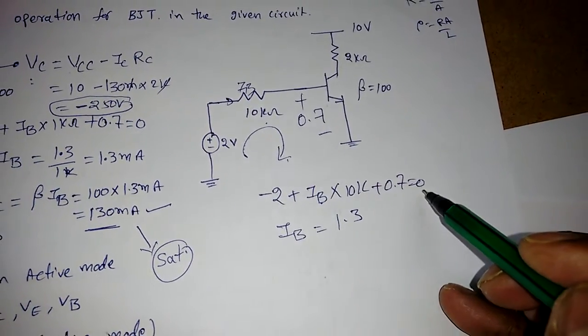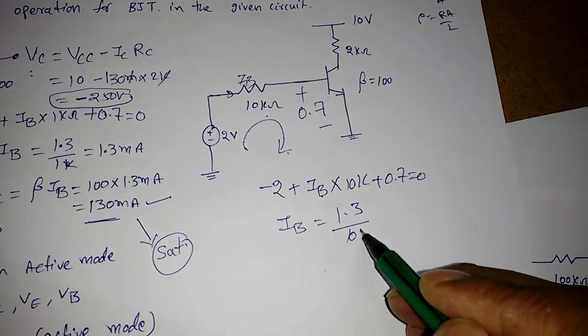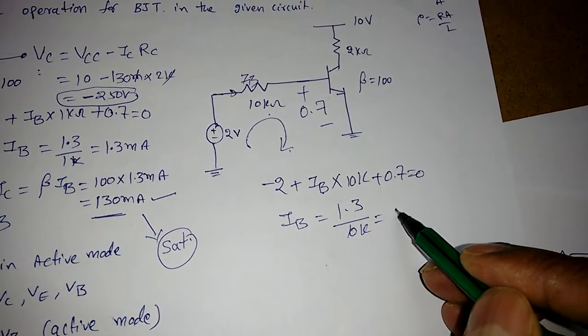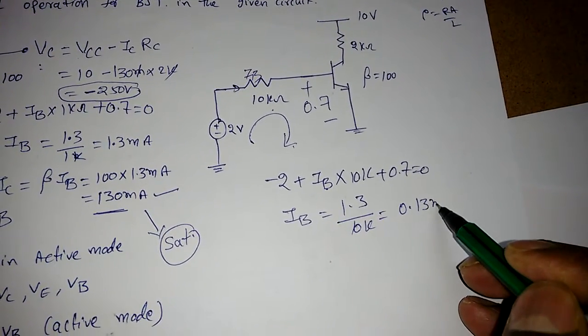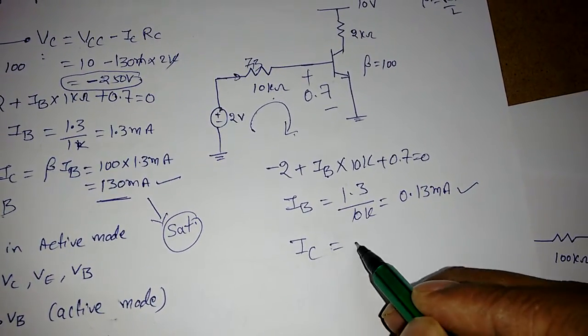So IB will become 1.3 / 10kΩ, which equals 0.13 mA. This is IB. Now what can be IC? It's beta times IB, so 100 × 0.13 mA.